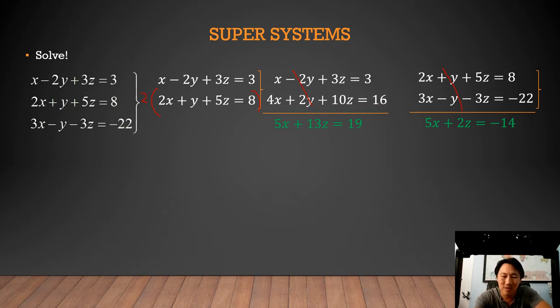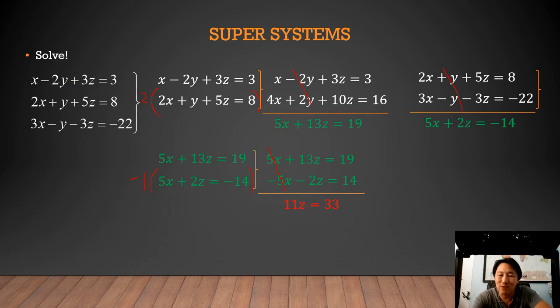Guess what I'm going to do with those two green equations now? I'm going to put them together, and now I have a system with two equations and two unknowns. Now we're back to something we were more familiar with. Now that Y is all gone, let's eliminate another letter. I can see in this problem that it might be easier to eliminate the X. I rewrote the first equation. I'm going to multiply everything in the second equation by negative one. That changes the sign of everything. When I do that and combine them, all the 5x's go away and I'm left with 11z equals 33.